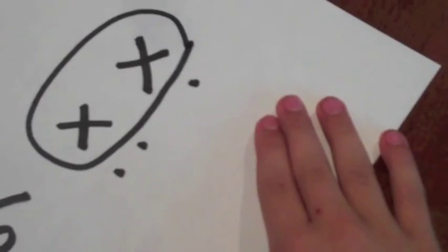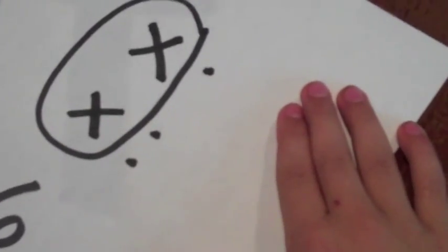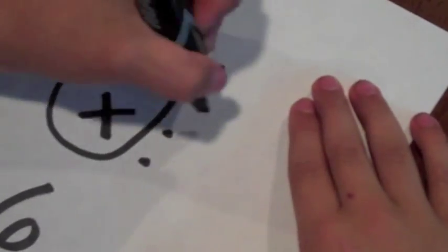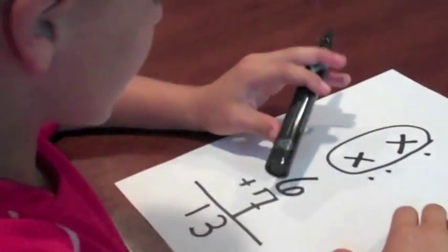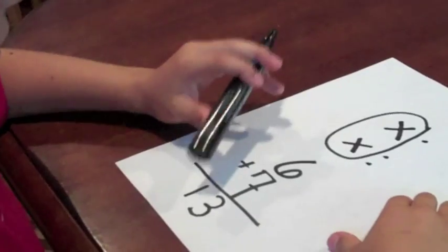How many tens did you make? One. And how much extra? Three extra. Okay, so you're going to write that answer down at the bottom. Nice job. Can you read the whole problem for me? Yes. Six plus seven equals thirteen. Good.